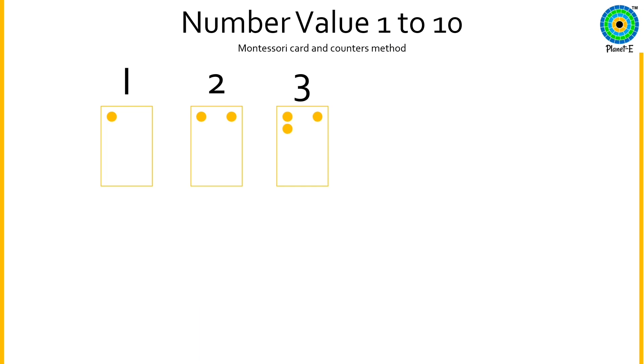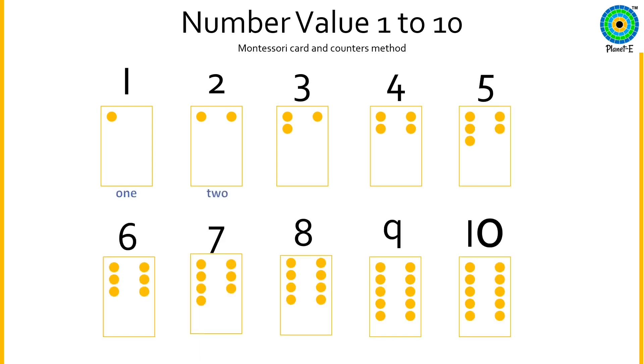First, we will count and place the objects against each number card. Every time we see a number, we will count from the beginning.